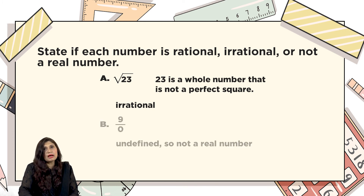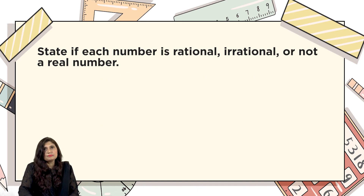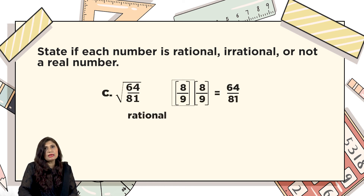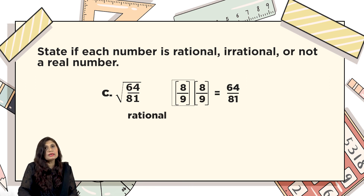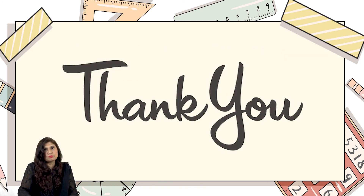What about 9/0? Here the denominator is zero, so it's an undefined number — it's not a rational number. Now the last example: you need to take the square root of both the numerator and denominator. The square root of the numerator gives 8, and the square root of the denominator gives 9, giving 8/9. This can be written as a fraction, so yes, it's a rational number. I hope you got the concept of rational and irrational numbers. Thank you.